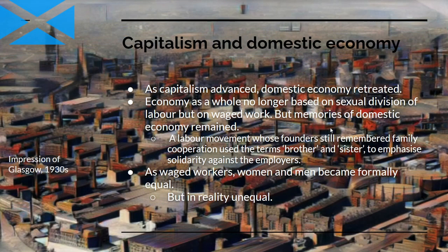As capitalism advanced, the domestic economy retreated. The economy as a whole was no longer based on the sexual division of labour but on waged work, but memories of the domestic economy remained. You can see this in that the labour movement — whose founders still remembered family cooperation — used terms like brother and sister to emphasise solidarity against employers. And as wage workers, men and women became formally equal, but in reality they were unequal — and I'll focus on that in the next video.